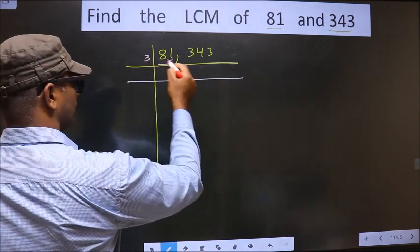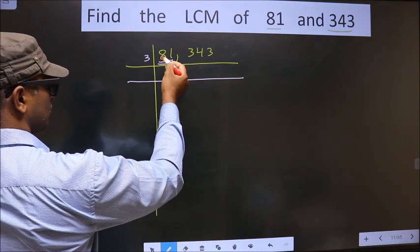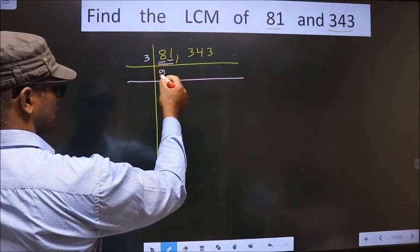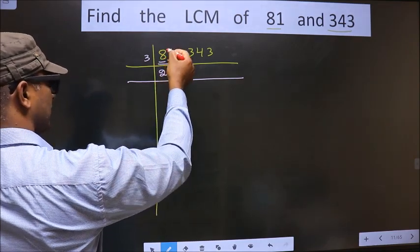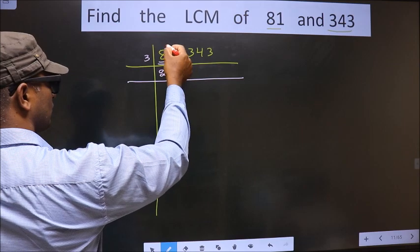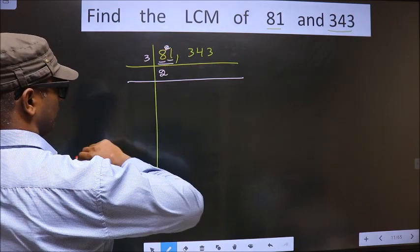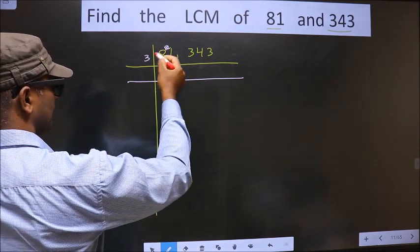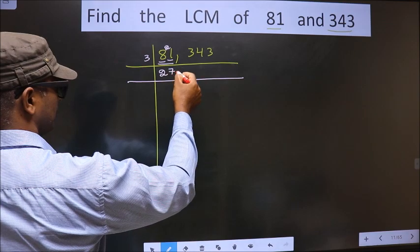Now the first number is 8. A number close to 8 in the 3 times table is 3 sixes 6. 8 minus 6 is 2, carried forward making it 21. When do we get 21 in the 3 times table? 3 sevens is 21. So 81 divided by 3 gives 27.